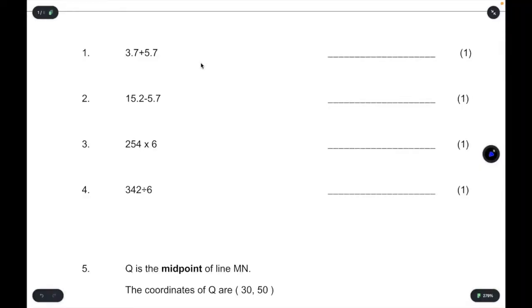Question one, we've got 3.7 add 5.7. If we do three add five, the whole numbers first, then we get eight. And then if we add what's after the decimal point, that's 0.7 add 0.7, which makes 1.4. So we're adding 1.4 onto eight, and that equals to 9.4.